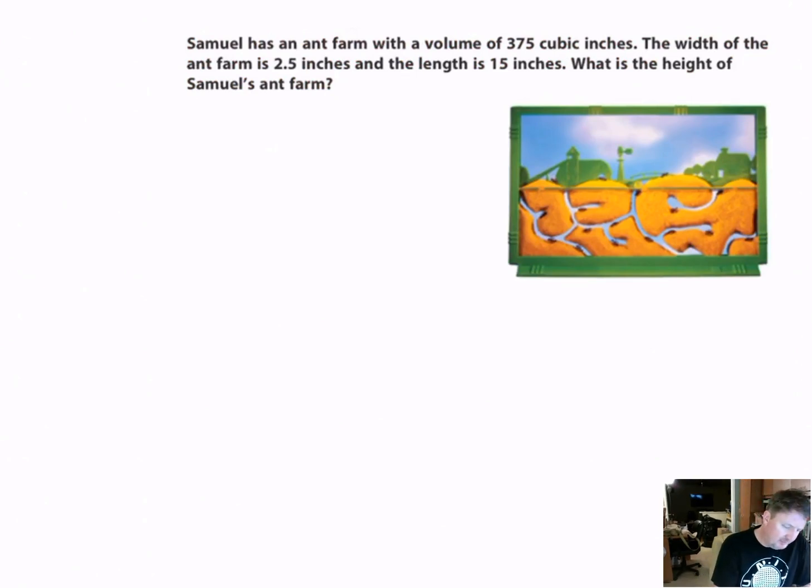Samuel has an ant farm with a volume of 375 cubic inches. The width of the ant farm is 2.5 inches and the length is 15 inches. What is the height of Samuel's ant farm? Let's start by writing our formula: volume equals length times width times height, and then plug in what we know.